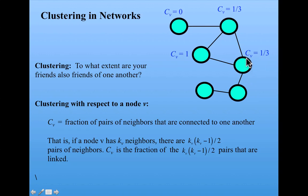This one, similar to this one, has one third. Zero. It has two neighbors, but they're not linked. So none of its possible pairs of neighbors are linked. And similarly, this one only has one neighbor, so it doesn't have any pairs of neighbors. So its clustering is zero.